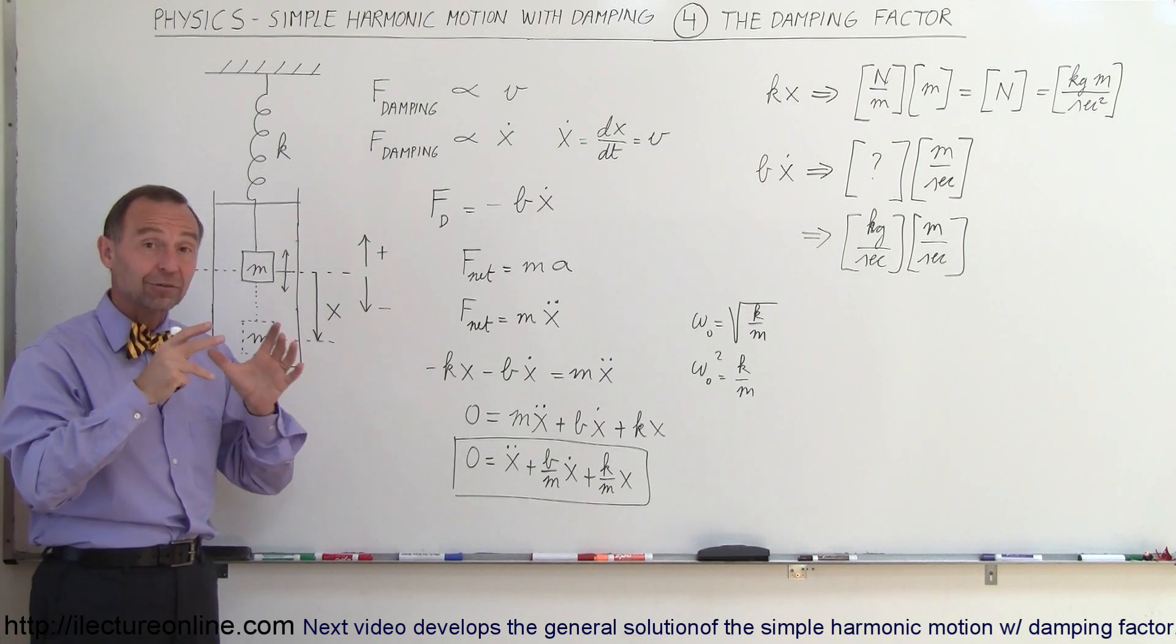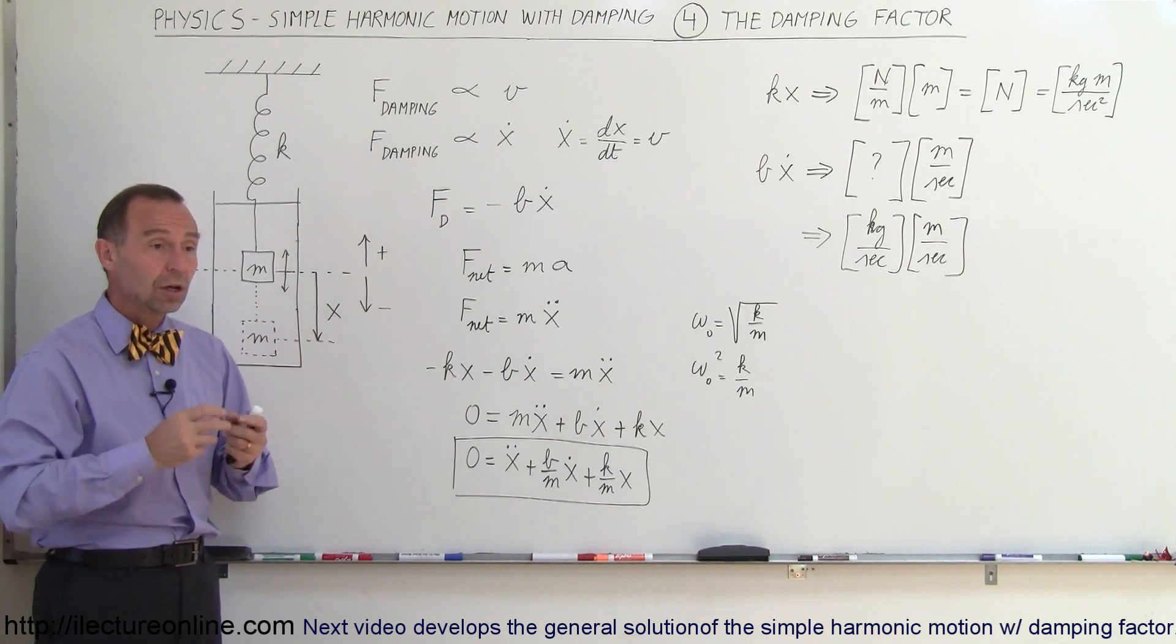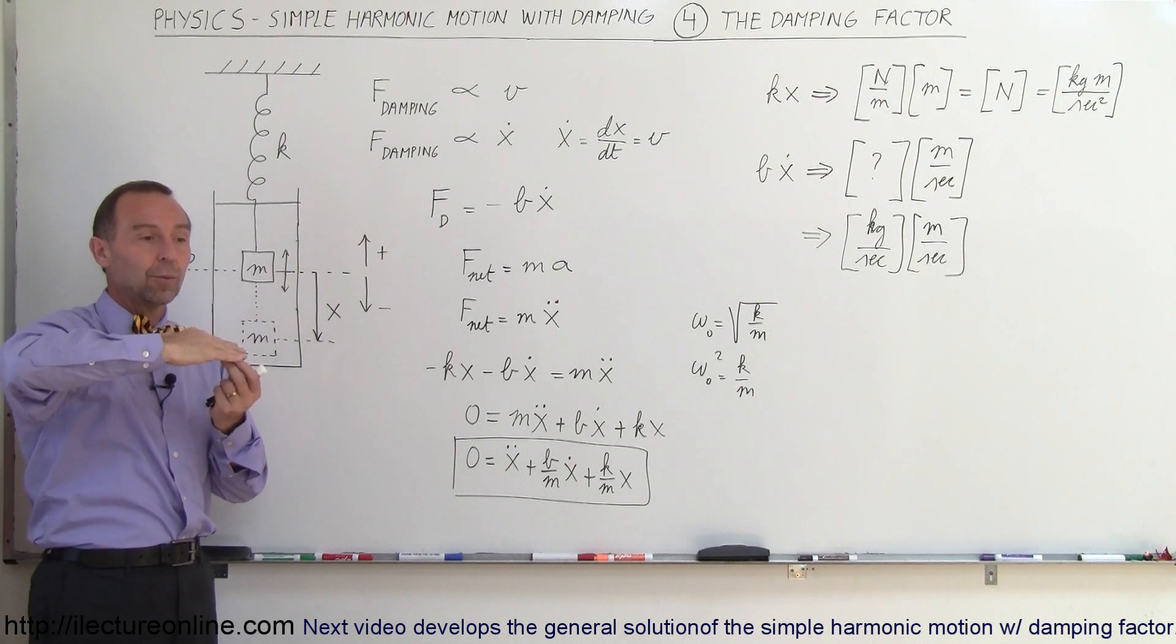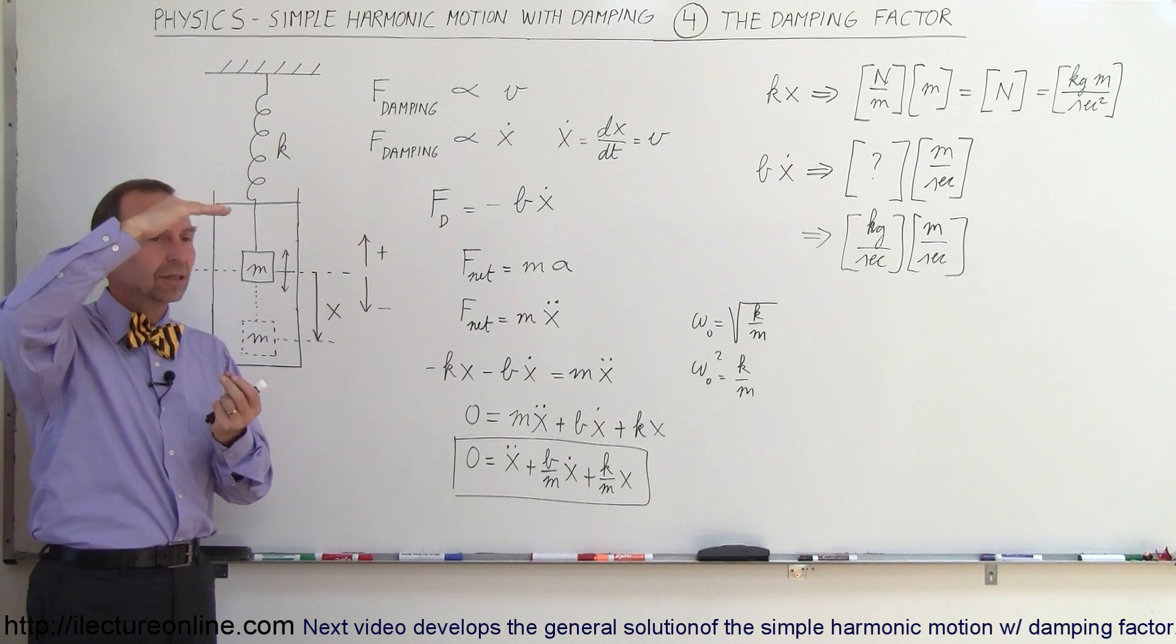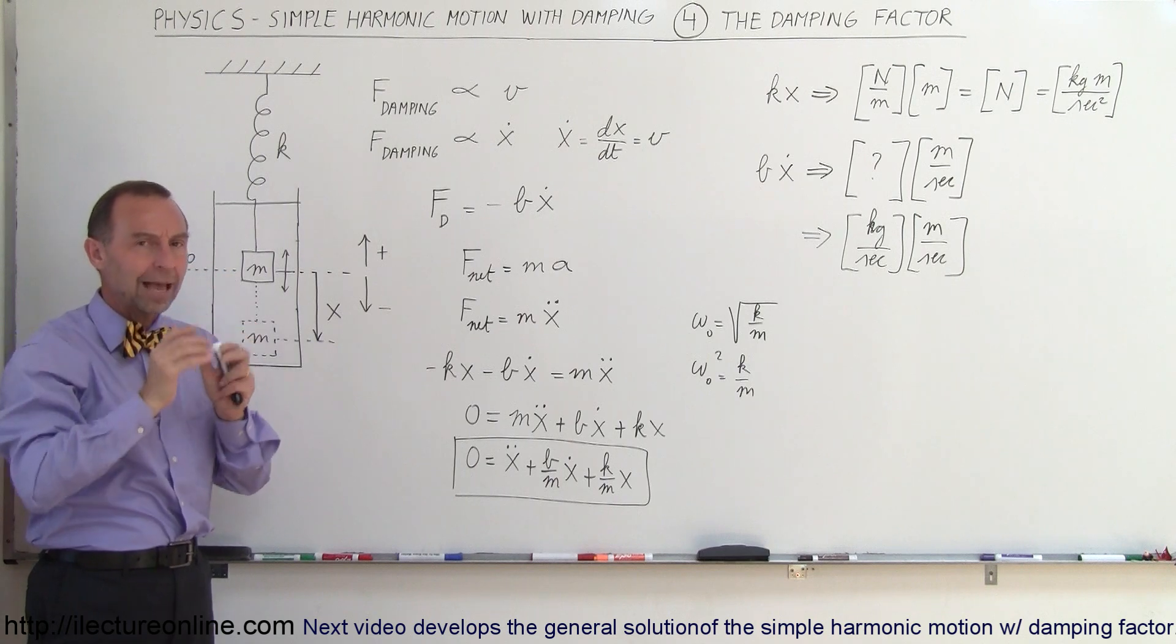When you have overdamping, the damping is very strong, so the moment you put the object away from equilibrium point, it will go back to the equilibrium point very, very slowly if the damping is very strong.